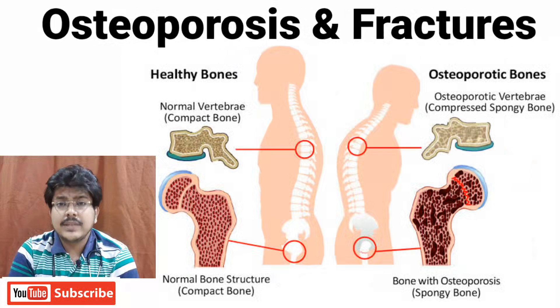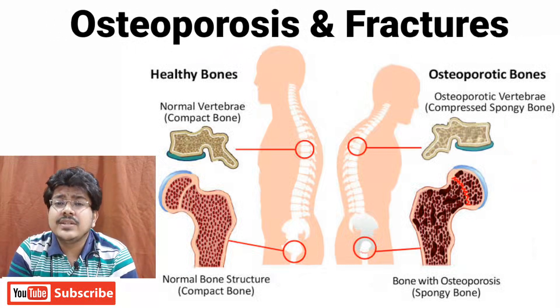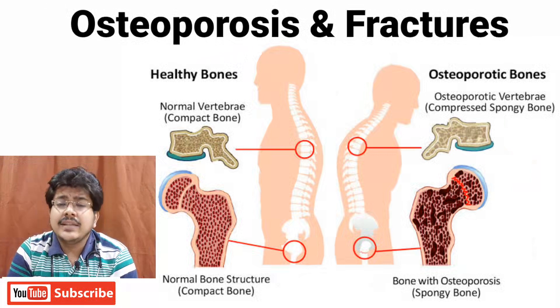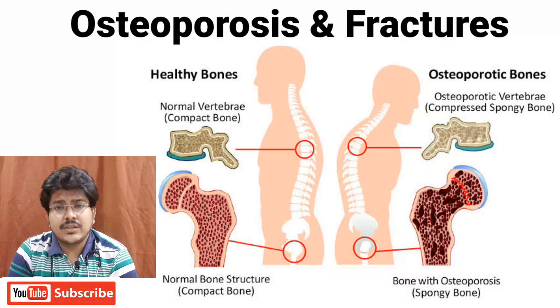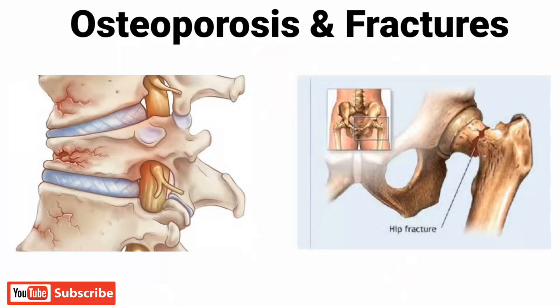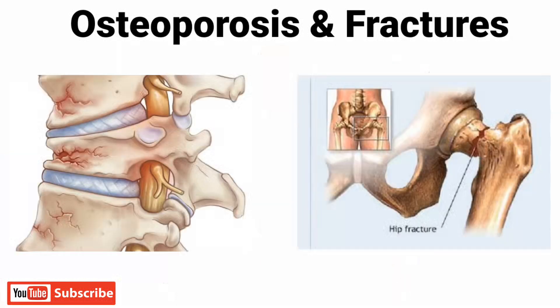What happens if you are suffering from Osteoporosis? Osteoporosis leads to an increased risk of fractures, especially in the regions of the vertebra and the neck-femur region, which are prone to fractures in old age. In this diagram we can see that there may be compression fracture of the vertebra or neck-femur fracture in the hip due to osteoporosis. These two fractures are commonly found in osteoporotic patients.